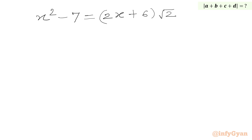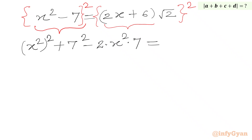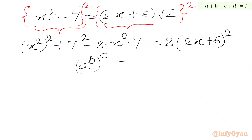Now we are going to square once again, as we need to find the quartic form. Writing our equation as x squared minus 7 equals (2x plus 6) times square root 2, and squaring both sides. We apply the (a minus b) whole square formula on the LHS and (a plus b) whole square formula on the RHS. So we get x squared whole square plus 7 squared minus 2 times x squared times 7. On the RHS, root 2 squared is 2, times (2x plus 6) whole square.